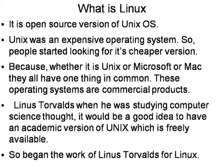What is Linux? Linux is basically an open source version of Unix. Unix was an expensive operating system, so people started looking for its cheaper or free version. Unix, Microsoft, and Mac all have one thing in common — they are all proprietary, commercial products. Linus Torvalds, when he was studying computer science, thought it would be a good idea to have an academic version of Unix which is freely available. So he began to work, and this is how Linux was born.